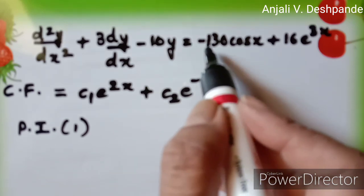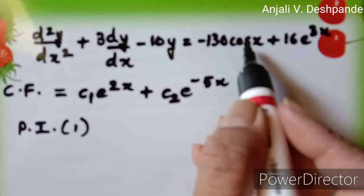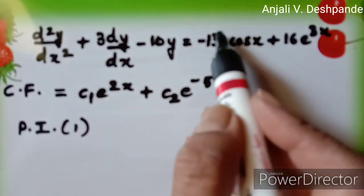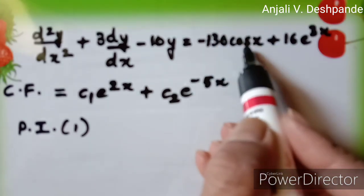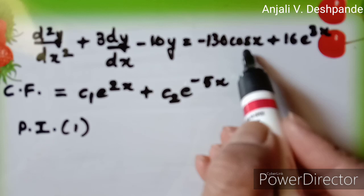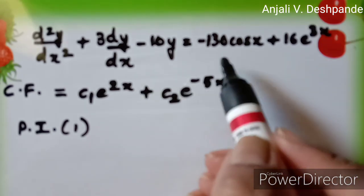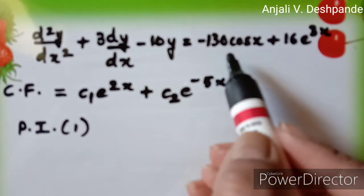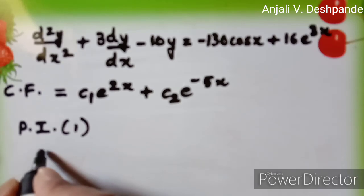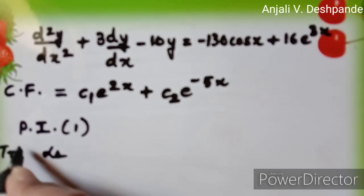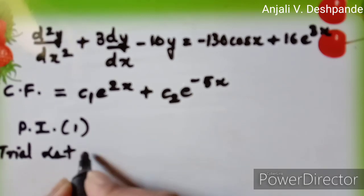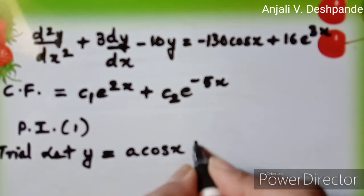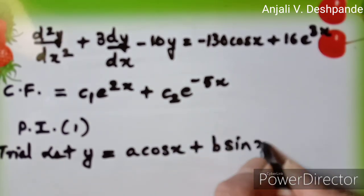As mentioned earlier in the video, we are going to follow the method of trial solution. Over here we can see that this is a cosine function, therefore we can make a guess that the trial particular integral is going to be a combination of sine and cosine functions. So let y be equal to a cos x plus b sin x.